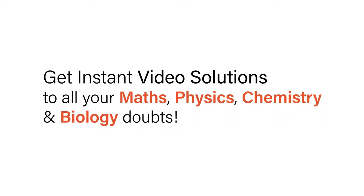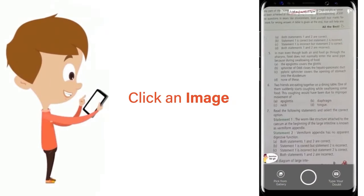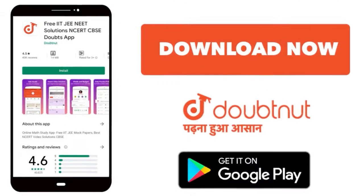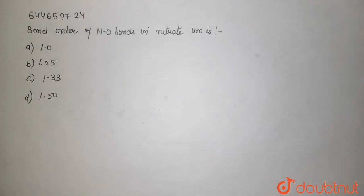With Doubtnut, get instant video solutions to all your maths, physics, chemistry, and biology doubts. Just click the image of the question, crop the question, and get instant video solution. Download Doubtnet app today. Bond order of NO bond in nitrate ion is: